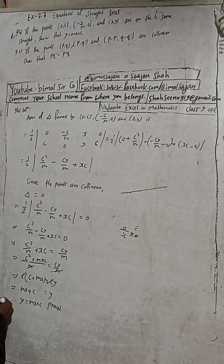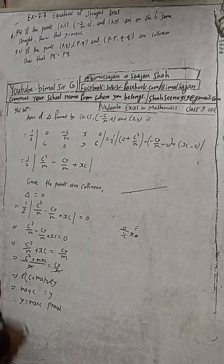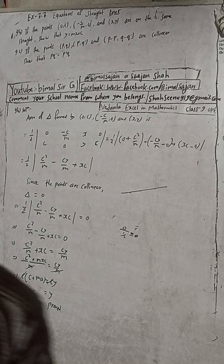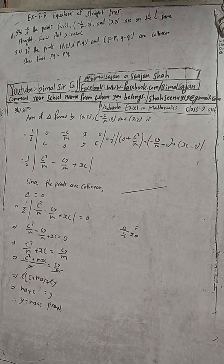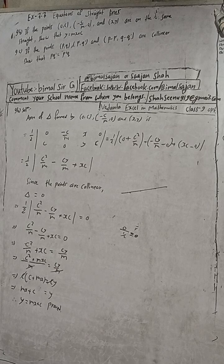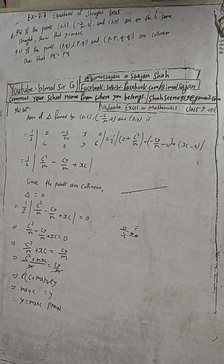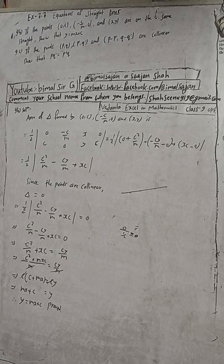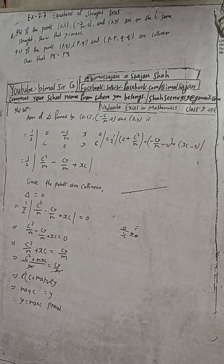So dear subscribers and viewers, this is the solution of this question. In Nepali: if the points (0, C), (-C/m, 0), and (x, y) are on the same straight line, since the points are collinear, the area of triangle formed by them equals zero.